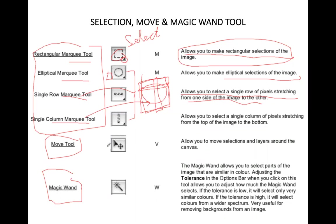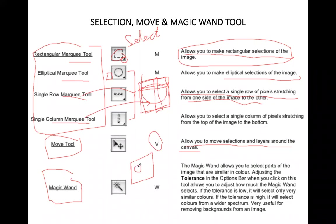After that, there is the move tool with shortcut key V. The move tool allows you to move selections and layers around the canvas — moving selected objects from one point to another in any direction.